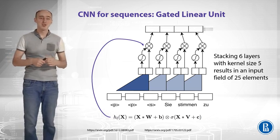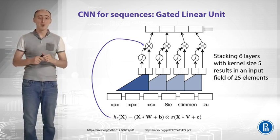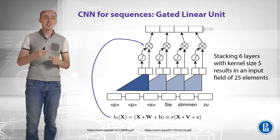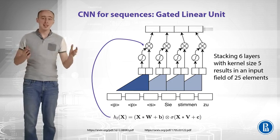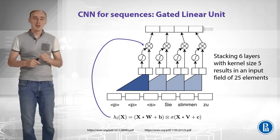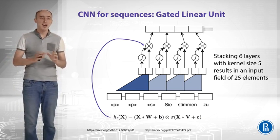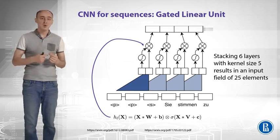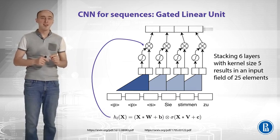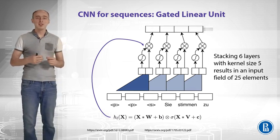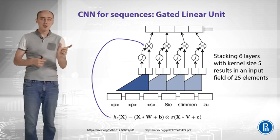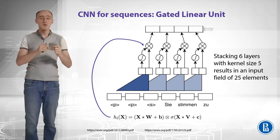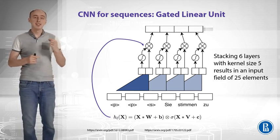Let's say we have an input sequence: padding, padding, then start of sequence, and three German words. We want to solve the task of language modeling — when we see each new token, we need to predict which token comes next. Usually we use recurrent architectures for this, but let's see how convolutions work. If we assume we care only about the last three tokens, we can use a convolution to aggregate that information — shown as the blue triangle here. We get some filters in the output, take half as is, pass the second half through a sigmoid activation, and take an elementwise multiplication of the two halves. What we get is a gated linear unit, which adds a nonlinear component.